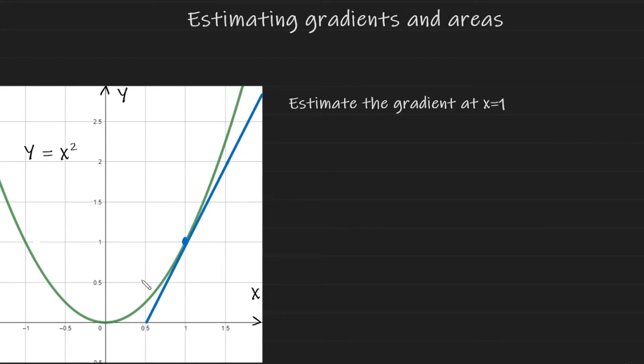So how can we now estimate the gradient using this tangent? Well, we need to find two points on this tangent that have numbers we can work with. So I'm going to choose this point here, which has a y value of 2 and an x value of 1.5. So I'm just going to write that down 1.5 for x and 2 for y. And I'm going to choose this point at the bottom here, which has an x value of 0.5 and a y value of 0. I'm now going to use these two points on the tangent to calculate an estimate for the gradient.